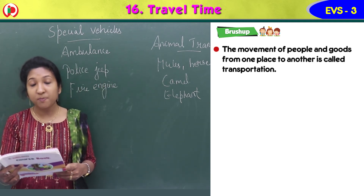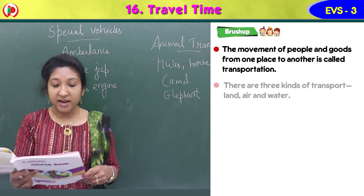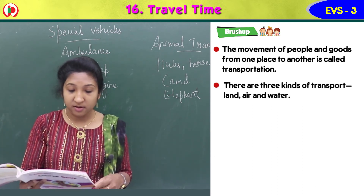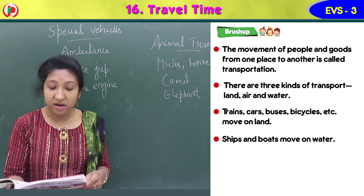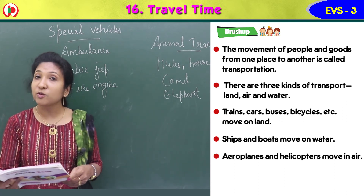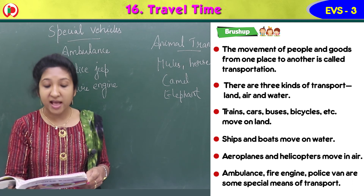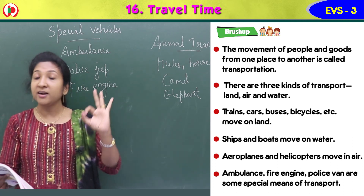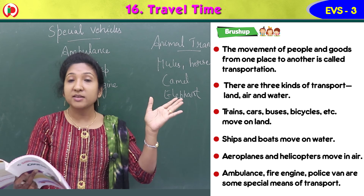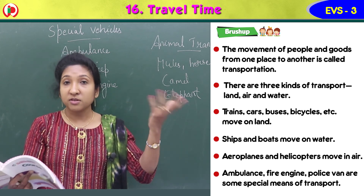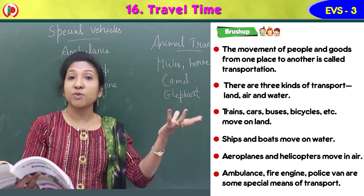The movement of people and goods from one place to another is called transportation. There are three kinds of transport: land, air, and water. Trains, cars, buses, and bicycles move on land. Ships and boats move on water. Helicopters and aeroplanes are the fastest means of transport. Ambulance, fire engines, and police jeeps are special vehicles.